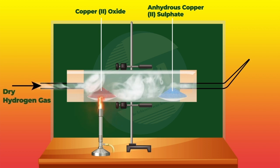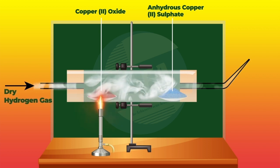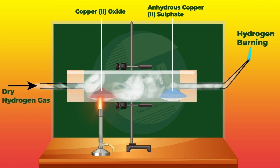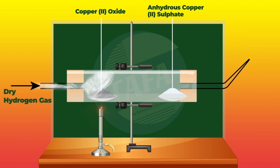chemical properties of hydrogen gas. We are going to look at the reaction between hydrogen and copper(II) oxide. This is a redox reaction - a reaction where both reduction and oxidation take place simultaneously.